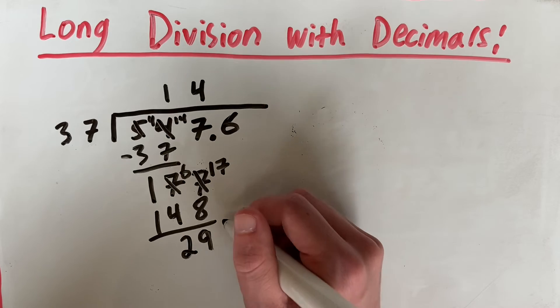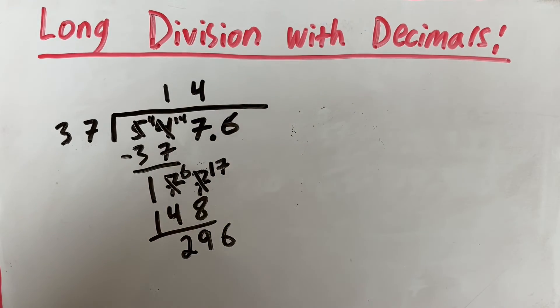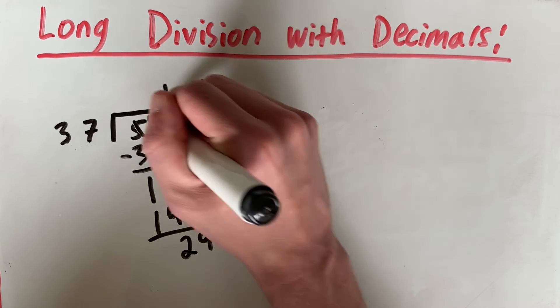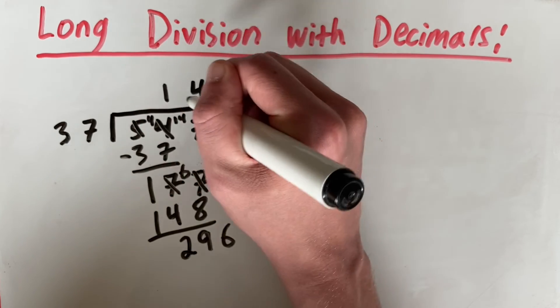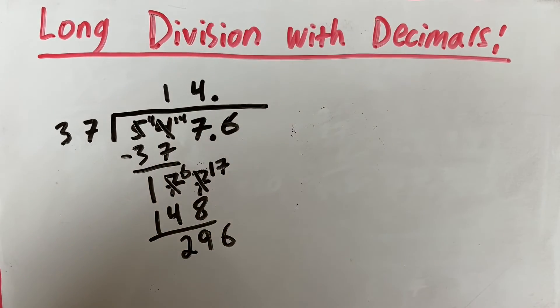We bring down our next number, which is 6. Now if you look here, our decimal point is here. And we have to keep that same decimal in our answer. So if we put that right above, we're going to get 14 and then our decimal point. So our answer will be 14 point something. Now let's continue.